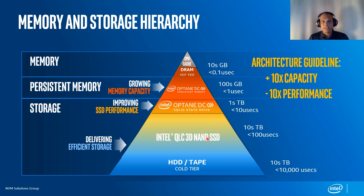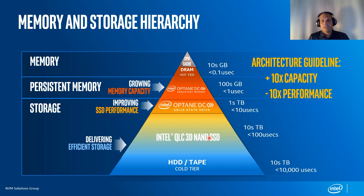Right above hard drives in the storage hierarchy are NAND SSDs, which store charge in a transistor — electrons are stored and read back as ones or zeros. NAND SSDs are a lot faster than hard drives but not quite as large. In a data center I may have 8, 10, or 16 terabyte SSDs. Optane fits right in between DRAM and NAND SSDs.